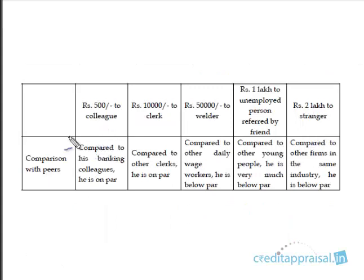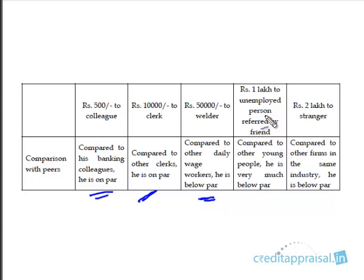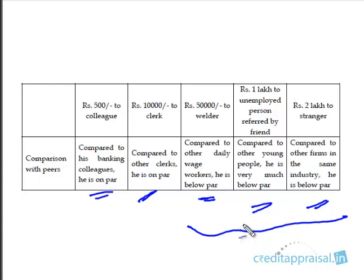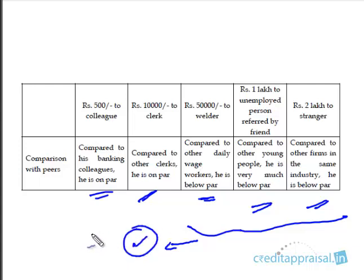When comparing with peers: your colleague and clerk are on par with their peers — nothing special, but not worse off either. However, the neighbor, compared to other daily wage workers, seems to be below par. The unemployed person, compared to other young people, is well below par. And the stranger, compared to other firms, is also below par. In the last three cases, these individuals are not doing as well as others of the same age or skill set.